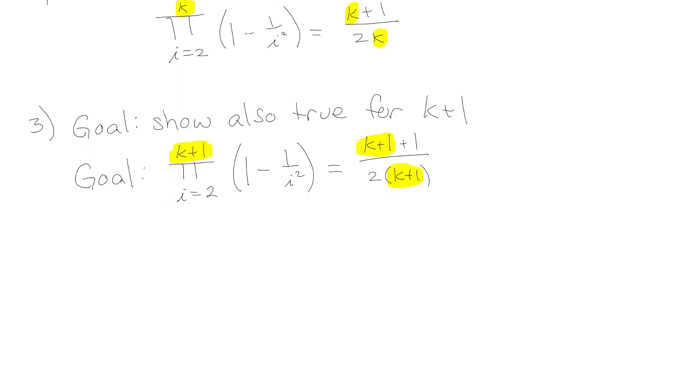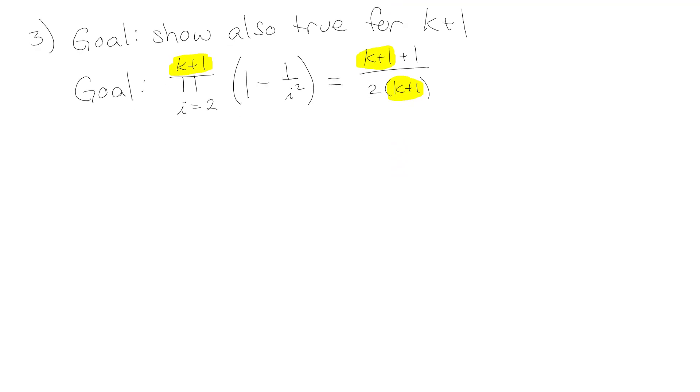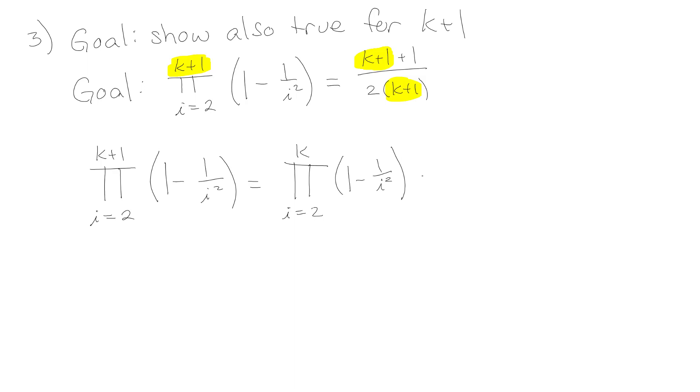This is going to follow pretty closely to what we did in the previous example. I'm going to start with the product from i equals 2 to k plus 1 of (1 minus 1 over i squared). I'm going to permute the product—I'm going to pull out the k plus 1th term. Now it's really important that this k plus 1 term, that we recognize this is multiplication. This is no longer addition because this is a giant product. So you have to be sure and put in that multiplication. Everywhere I see an i, I'm going to put a k plus 1.